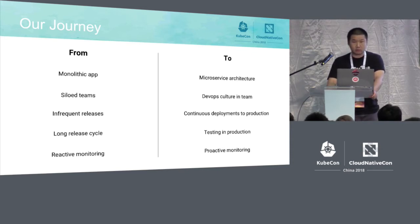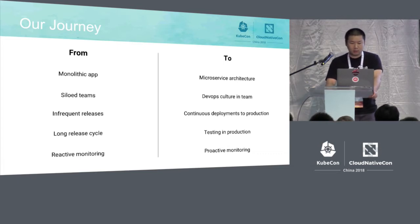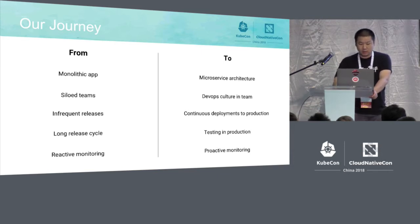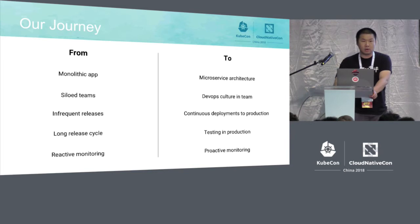We actually broke down the infrastructure team and embedded each infrastructure engineer into the product engineering team, empowering the product engineering side to do more frequent releases. Now we do continuous deployment to production every day, every hour. We reduced the release cycle by testing directly in production. We also moved from reactive monitoring — where users would tell us how we were doing — to proactive monitoring through a monitoring stack and API testing.